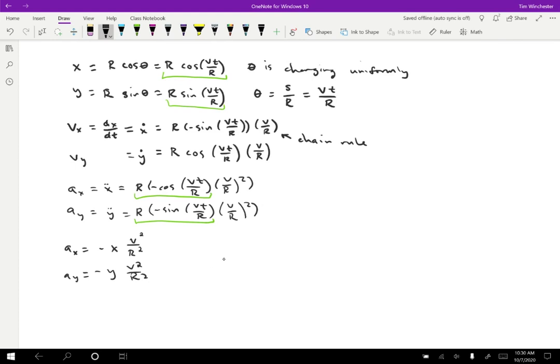We're getting really close now. So if I want to find the total acceleration, then that's just going to be square root of AX squared plus AY squared, which we have expressions for now. That's going to be negative X V squared over R squared squared plus negative Y V squared over R squared squared. And the V squared and R squared are going to be the same. So I'll get V squared over R squared out front, square root of X squared plus Y squared. And that's just R. So the radius of the circle is X squared plus Y squared at any given point. And so we're going to get V squared over R. That's the expression for the acceleration of an object undergoing uniform circular motion.